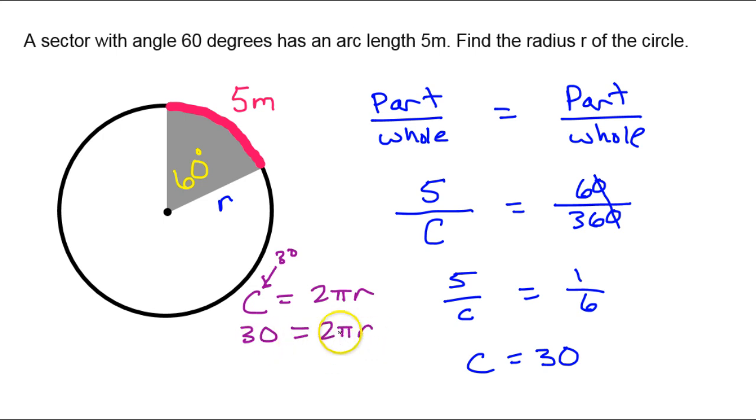All I have to do is divide both sides by 2π. So I will divide both sides by 2π. That will cancel these out and get r by itself.